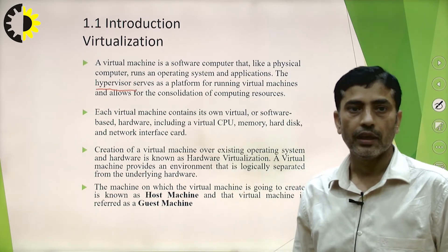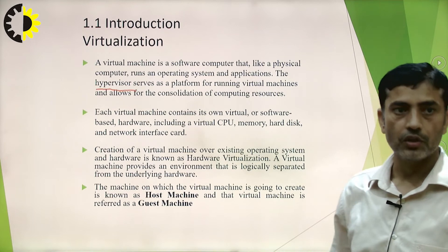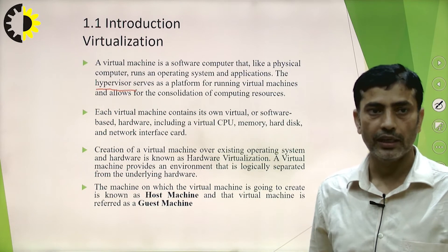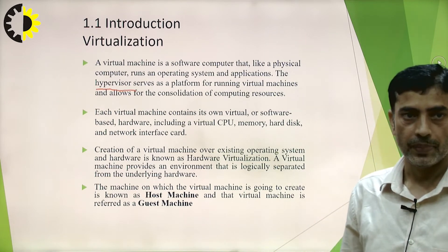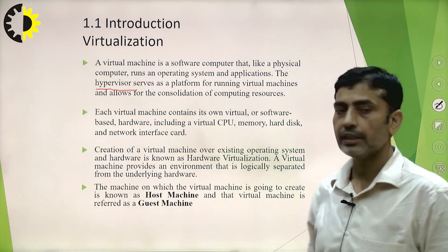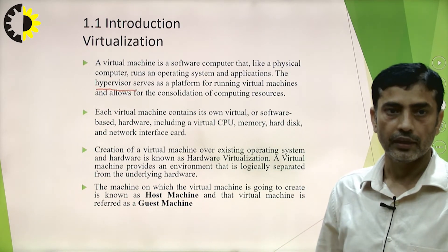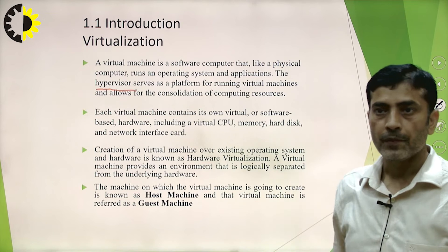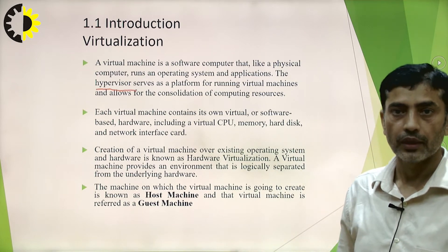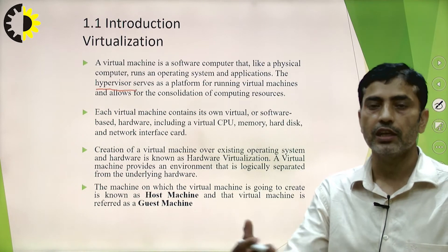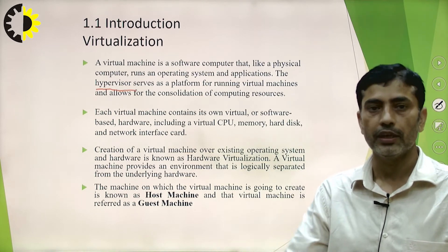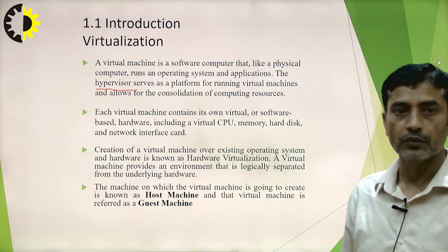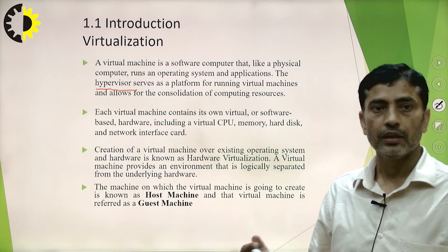Each virtual machine contains its own virtual or software-based hardware, including a virtual CPU, memory, hard disk, and network interface card. The creation of virtual machines over an existing operating system and hardware is known as hardware virtualization — that means creating virtual instances of hardware like CPU, storage, network, NIC, and hard disk.